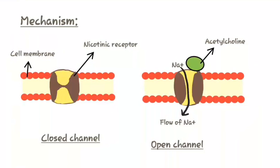Let us study the mechanism of nicotinic receptors. These are nicotinic receptors which are present in the cell membrane. When acetylcholine is not attached to the nicotinic receptors, the channels are closed and thus ions cannot flow through it. But when acetylcholine is attached to the nicotinic receptors, ions like sodium can easily flow through it. So when acetylcholine attaches to the nicotinic receptors, the channel gets opened.